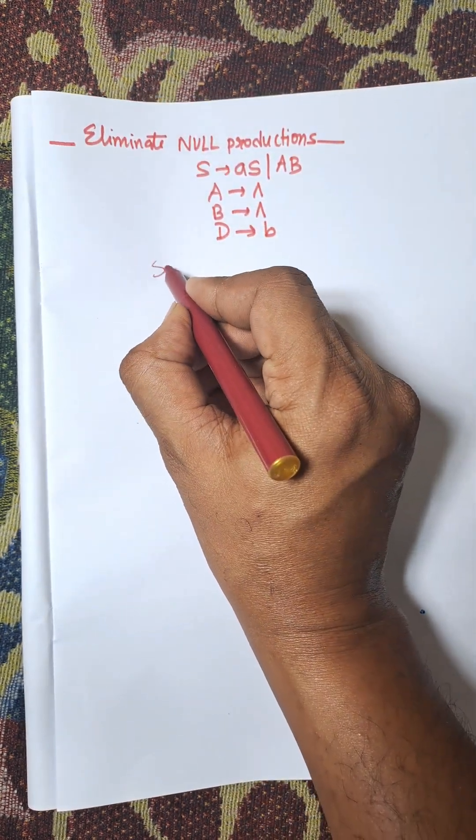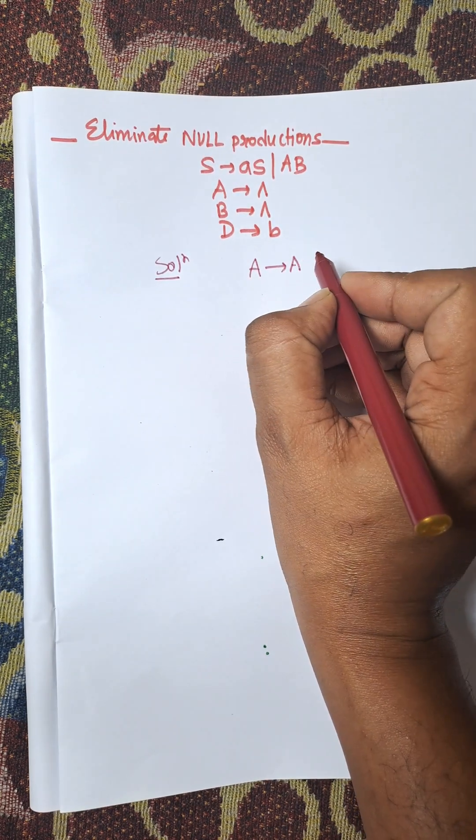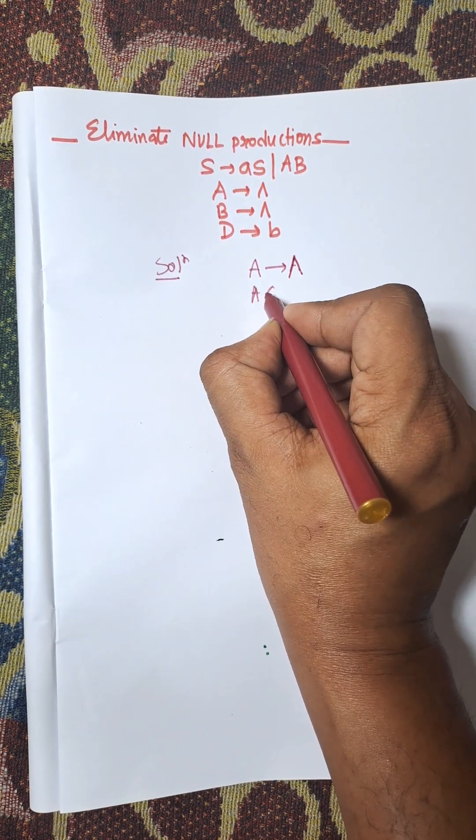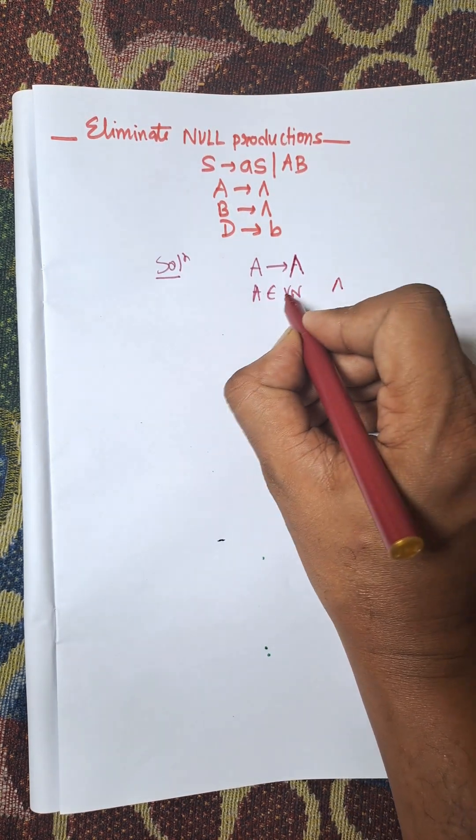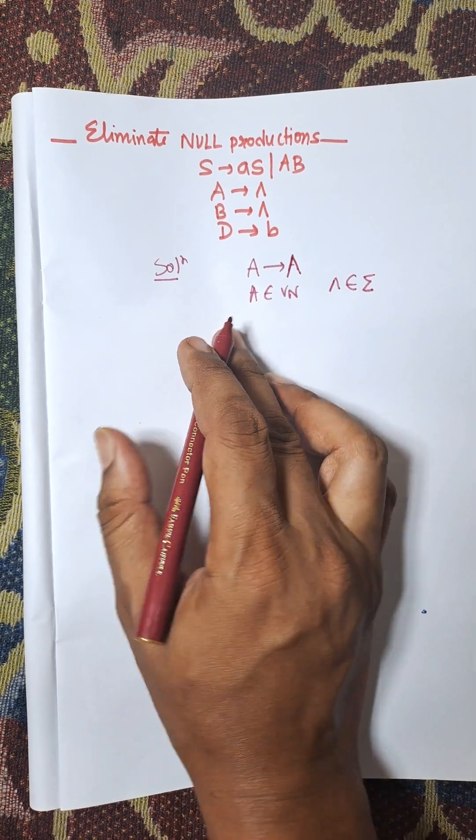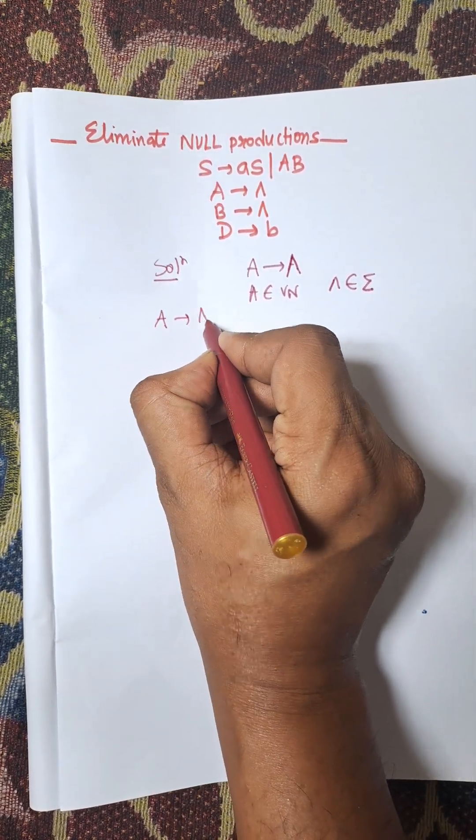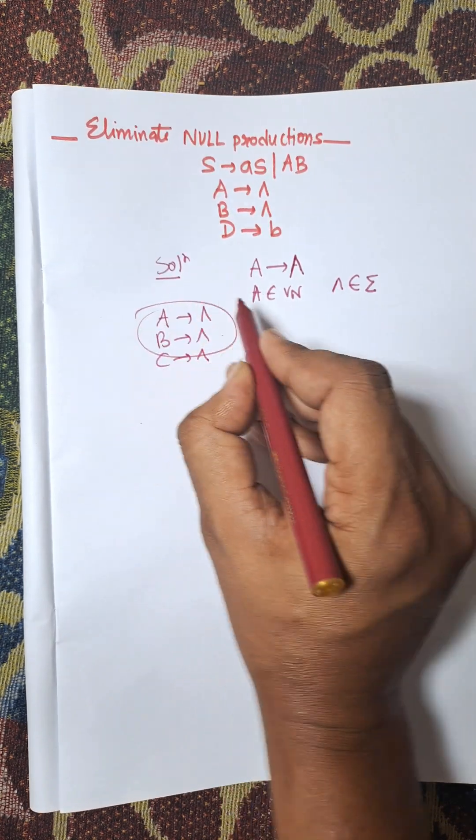First of all, we need to know what is a null production. Any production in the form A arrow empty, where A belongs to VN and empty is a terminal symbol. So any production of the form A arrow empty or B arrow empty, like this, they are known as null productions.